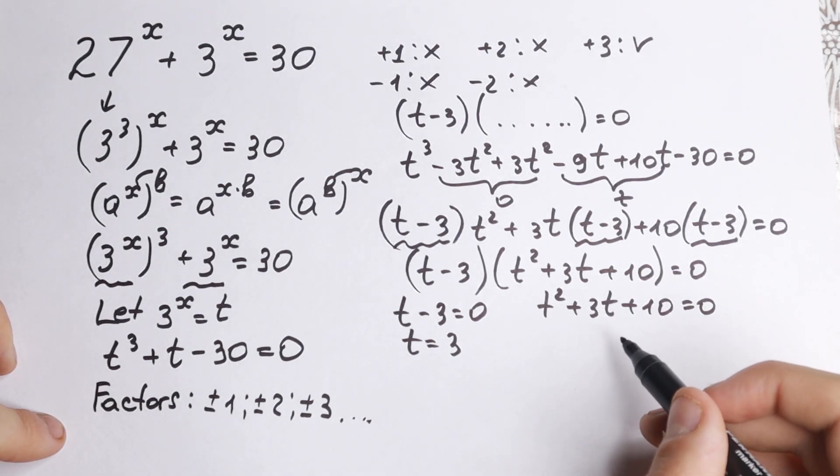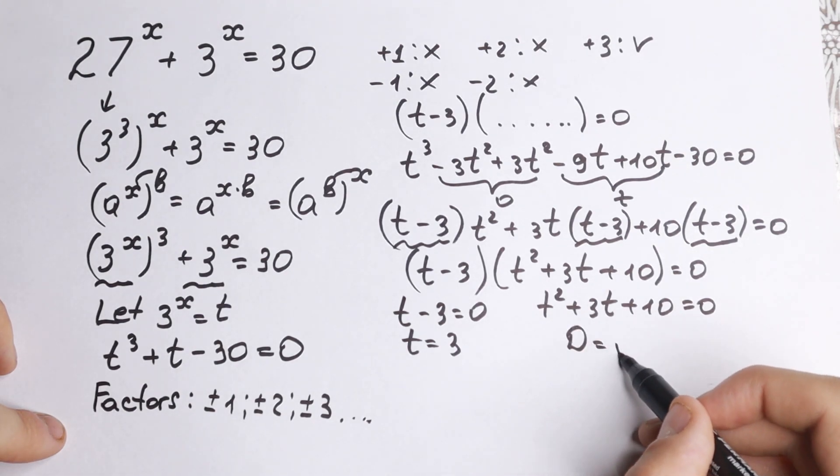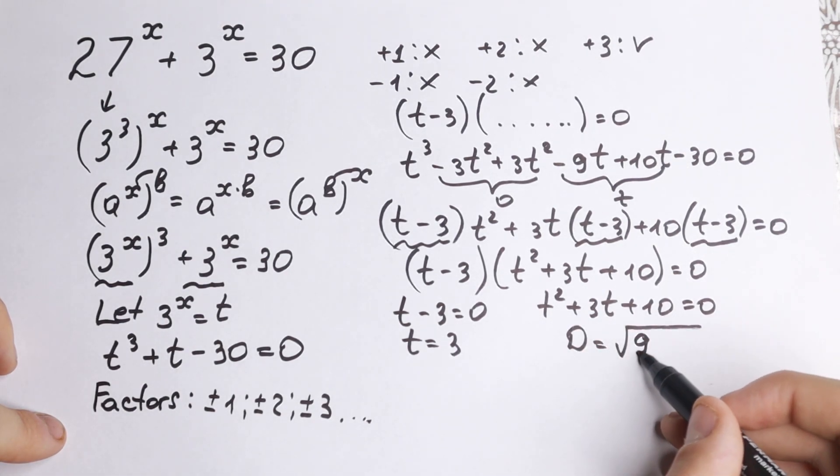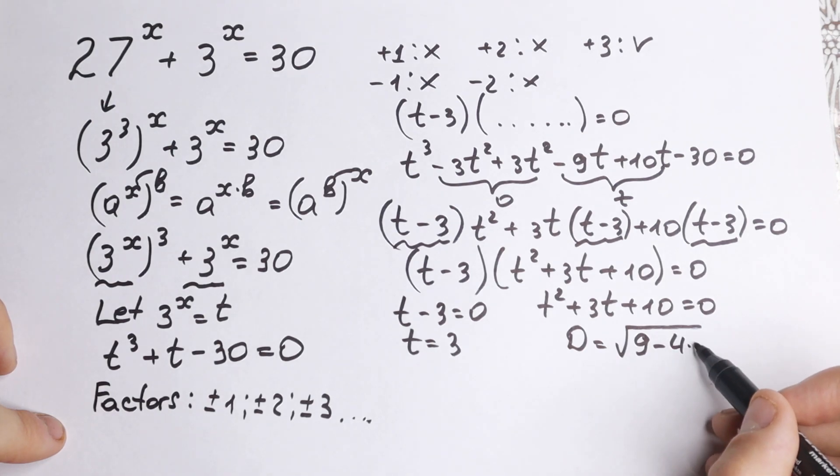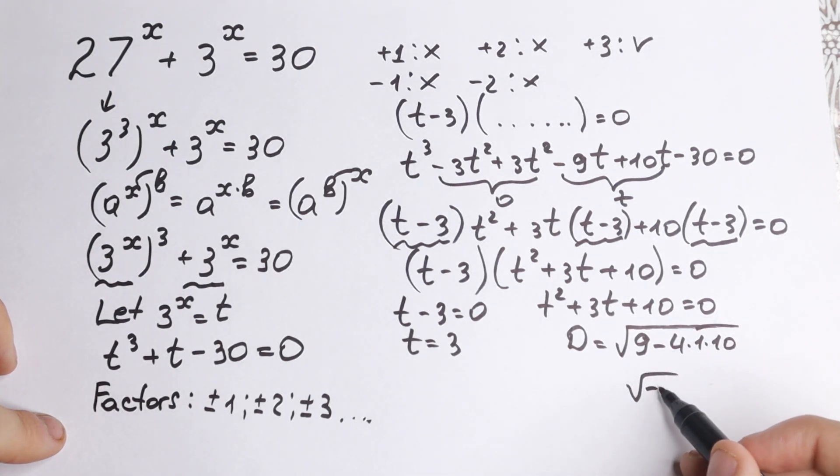And from here, let's find the discriminant. It will be equal to 9 minus 4 times 1 times 10. So it looks like negative because we'll have minus square root of minus 31. So here we will have two complex roots.